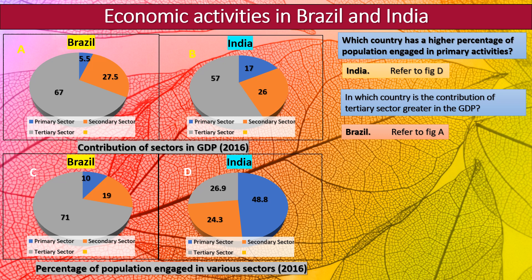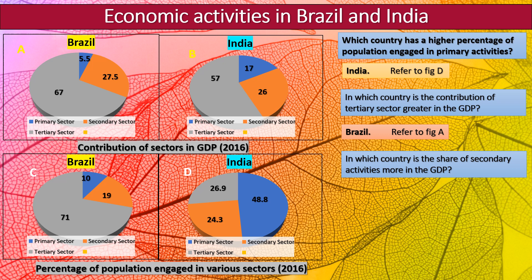The next question: in which country is the share of secondary activities more in the GDP? Referring to the pie chart, the secondary sector is shown in orange. The contribution of the secondary sector is 27.5% for Brazil and 26% for India's GDP. So the answer is Brazil.